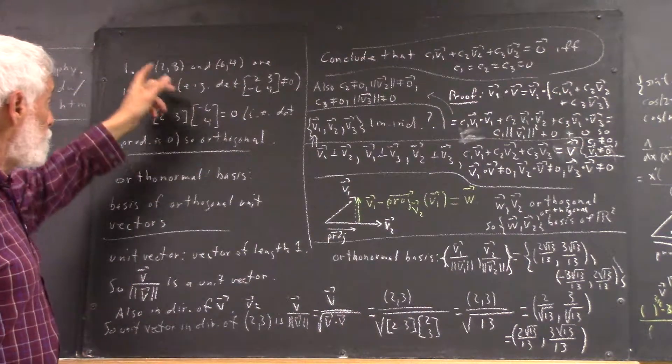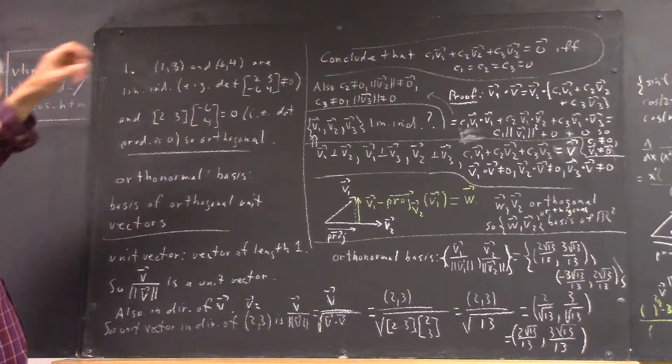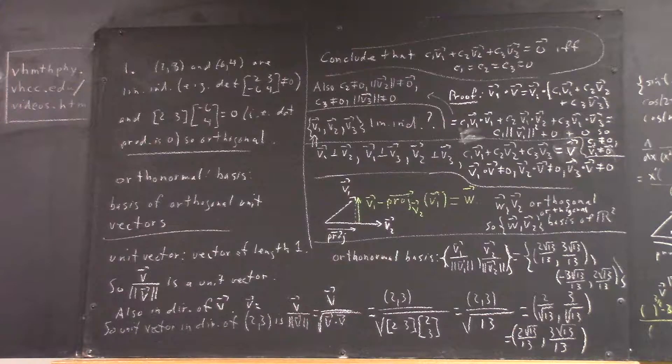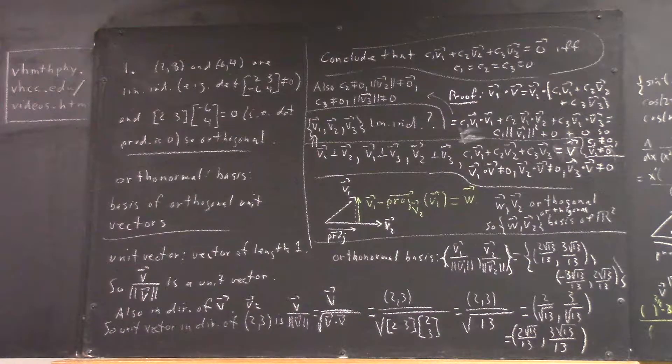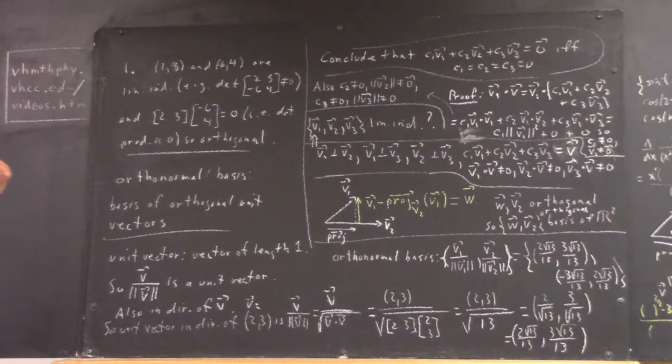Okay, so this is an orthogonal basis. These two vectors would constitute an orthogonal basis of, excuse me, R2.